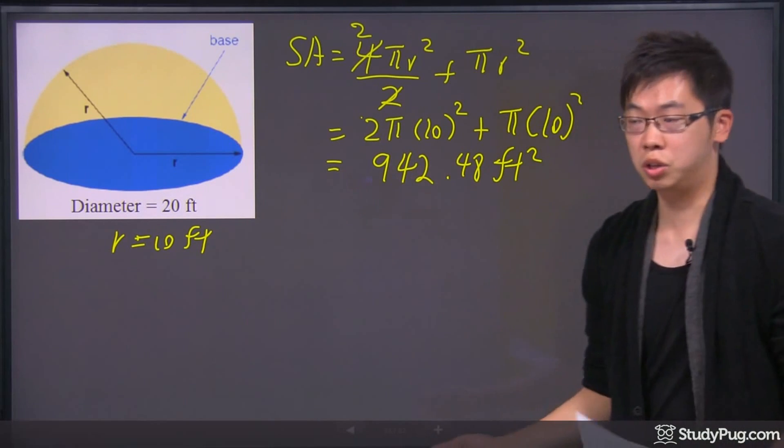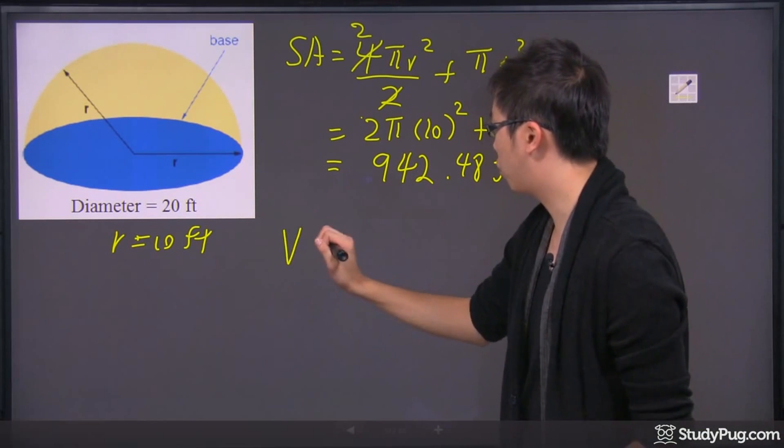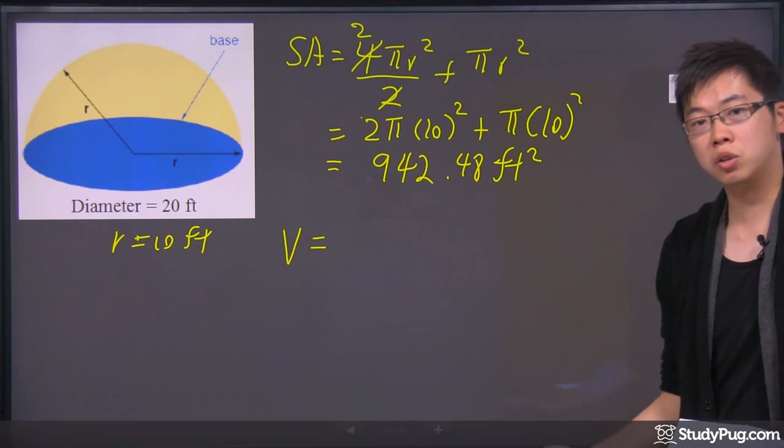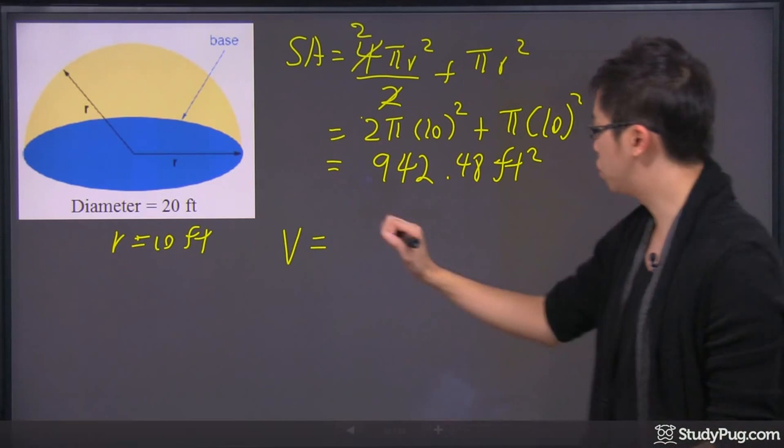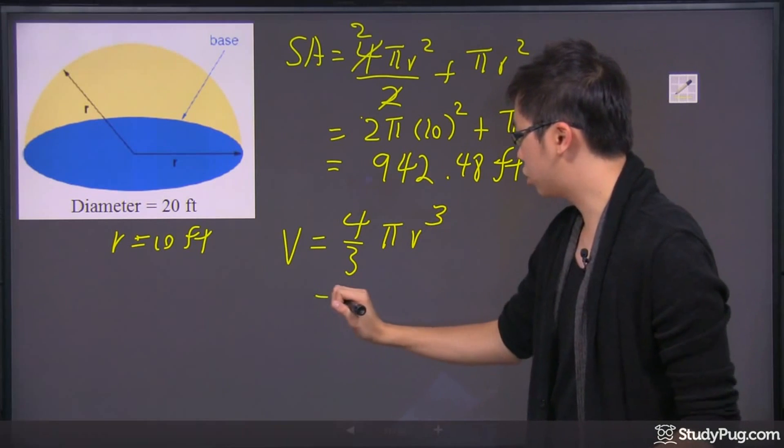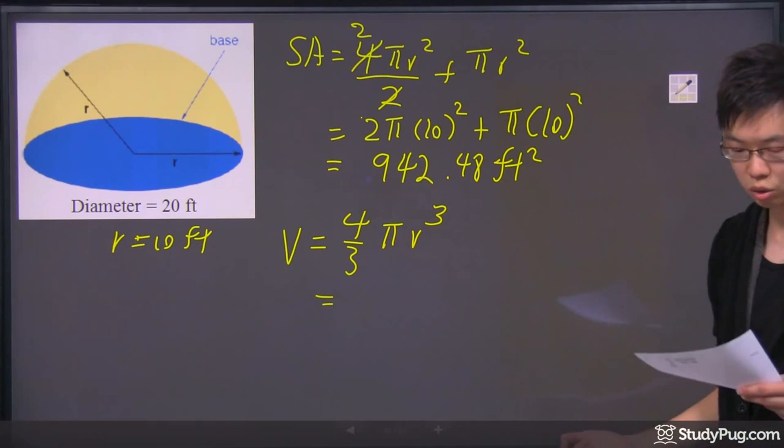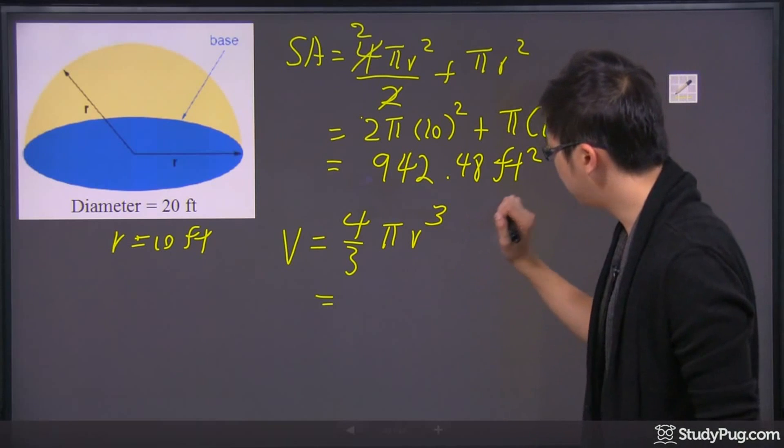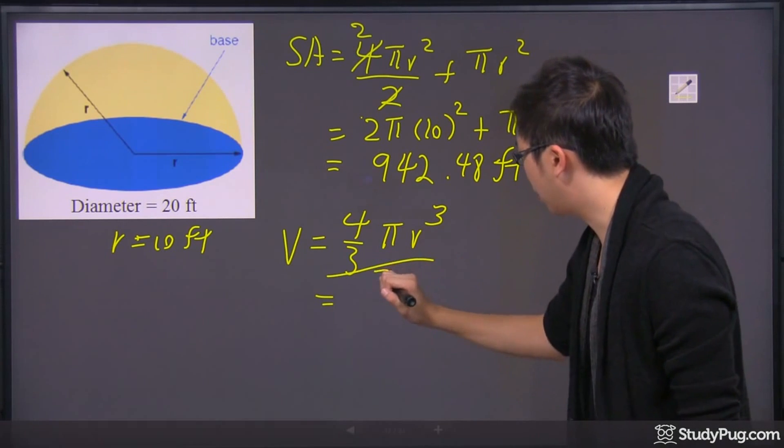Now, for the volume, it's much easier, because for the volume you don't have to worry about too much. Just get the equation of the sphere, which is 4/3 πr³, then you just plug it in. But at the end, you just have to divide it by 2. So let's just go ahead and divide it by 2 right here.